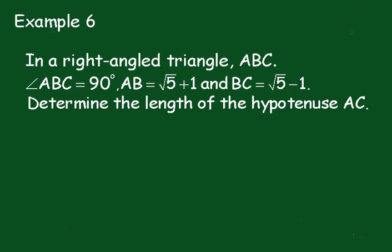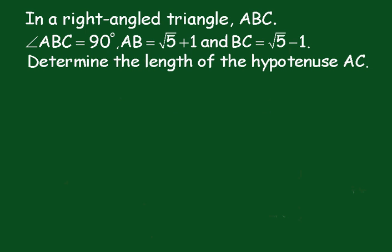So what I need to do now is to draw a diagram here. It's a right angle triangle with vertices A, B, and C. This angle is the right angle. AB is root 5 plus 1. This one is root 5 minus 1.